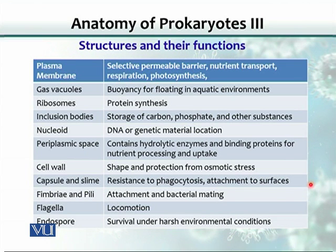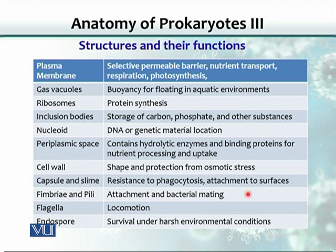The capsule helps bacteria evade the immune system so that immune cells cannot phagocytose, ingest, or kill these bacteria. Fimbriae and pili are projections on the cells. They are used for attachment of the bacterium to surfaces and also for transferring genetic material — DNA — from one bacterium to another.